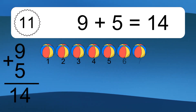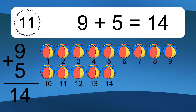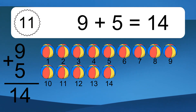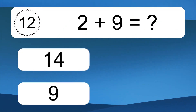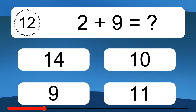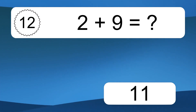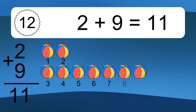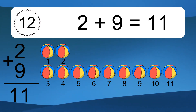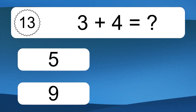9 plus 5 equals 14. Let's count it. 1, 2, 3, 4, 5, 6, 7, 8, 9, 10, 11, 12, 13, 14. 2 plus 9 equals what? 2 plus 9 equals 11. Let's count it. 1, 2, 3, 4, 5, 6, 7, 8, 9, 10, 11. 3 plus 4 equals what?